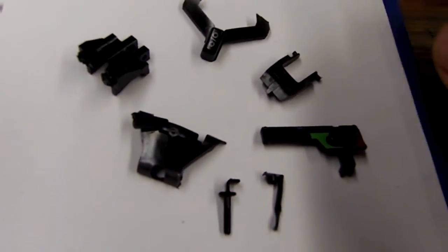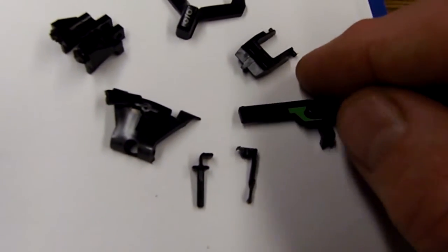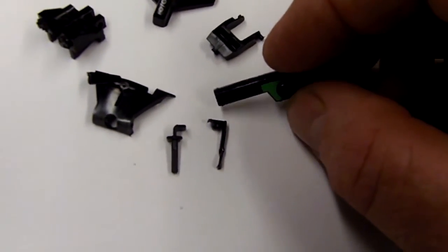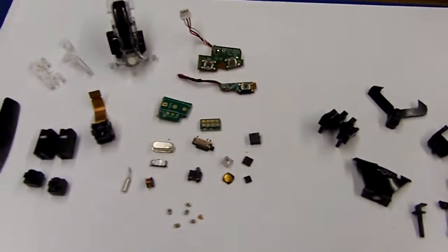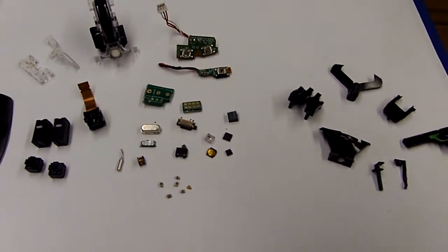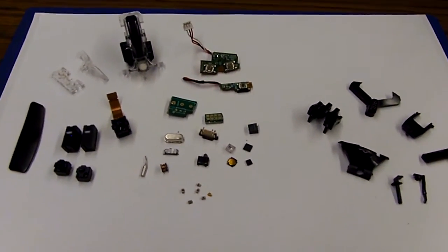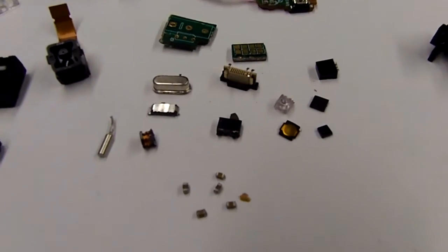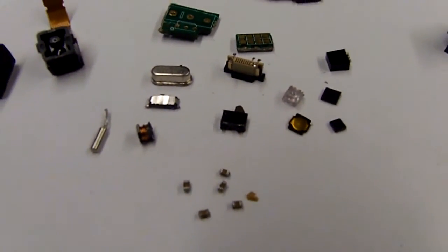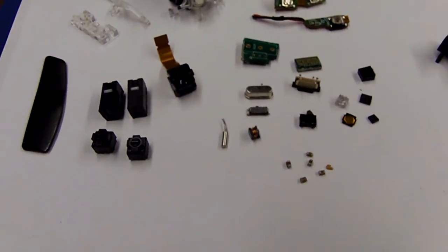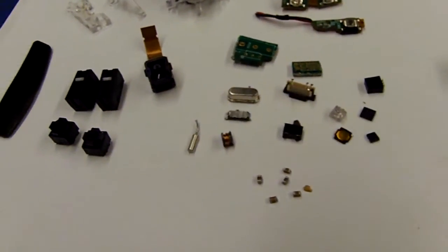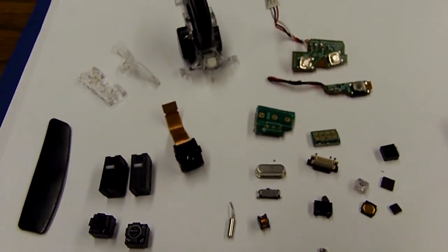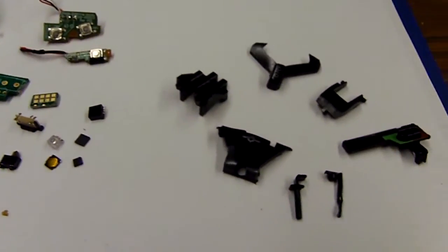This almost looks like a gun, doesn't it? So taking a wireless mouse apart and depopulating the circuit board, you have a lot of little items you could use to scatter in a laboratory and other custom props.